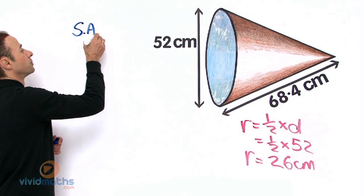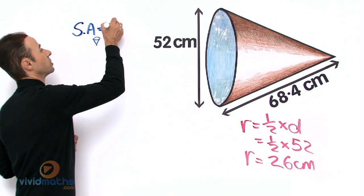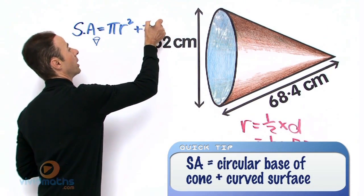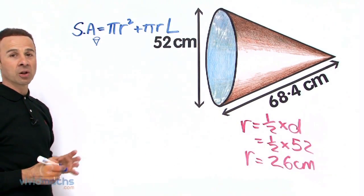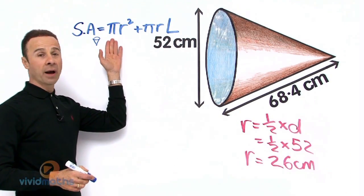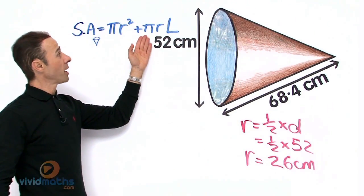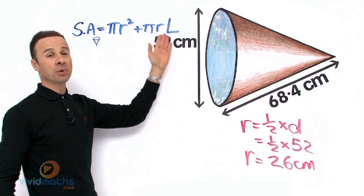Surface area of a cone equals πr² + πrL. Okay, let's go through and take a closer look at this formula. We have π times r, the radius we have already got, that is going to be 26, plus π times the radius again, 26, as I said earlier. And L, that capital L stands for the slant length.